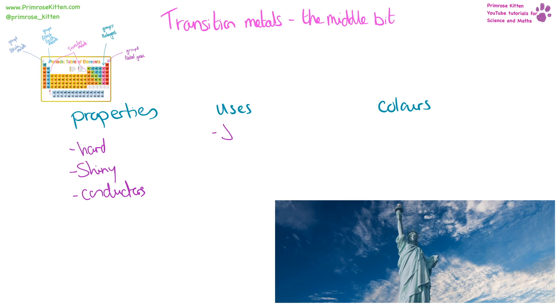Because of their properties, they can be used in jewelry, in wires, or in saucepans. And because they get all these different colors, they can be used in things like stained glass or for coating statues.